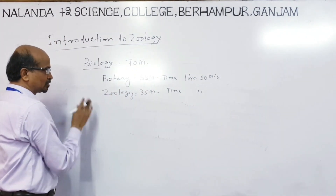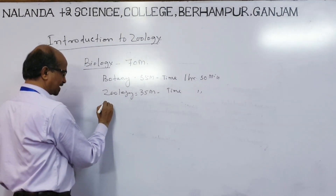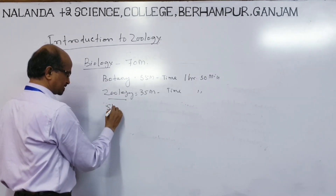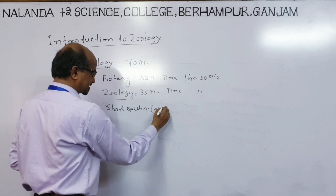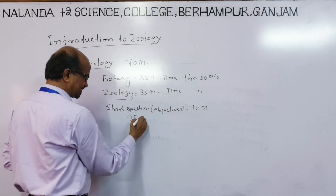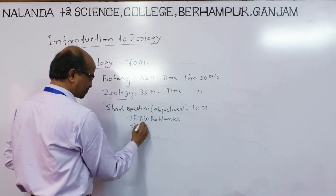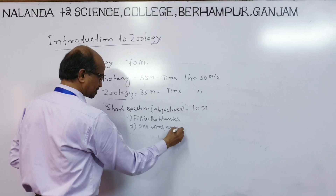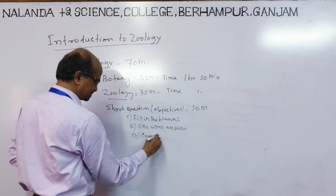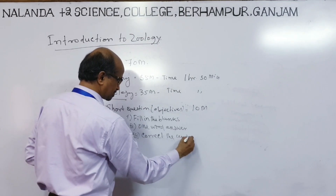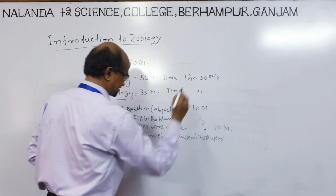In Geology, you see the pattern of questions. In 35 marks you will get 1 hour 30 minutes. The first question is objective — all objectives: fill in the blanks, one word answers, and correct the underlined one. All these three will be of 10 marks.